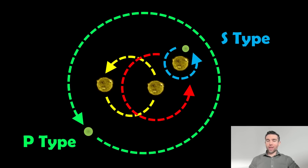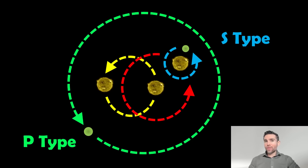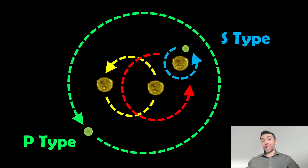Hi, welcome to this video. My name is Phil and I'm a senior lecturer in astrophysics at the University of Lincoln. I want to use this video to have a look at the different sorts of orbits that you can have of a planet that's actually orbiting multiple stars.